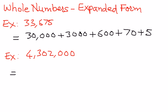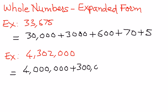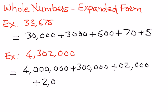4 is in the millions place, so we write 4,000,000 first. Then we look at the next number, which is in the 100,000's place, so we write 300,000. There is no 10,000's number, so we write 0. There is a thousands place, so we write 2,000. There is no hundreds place, so we write 0. There is no tens place, so we write 0. And there is no ones place, so we put a 0 there.